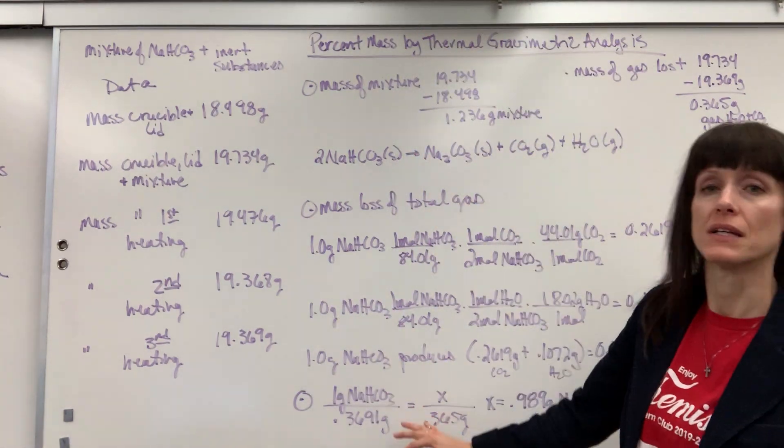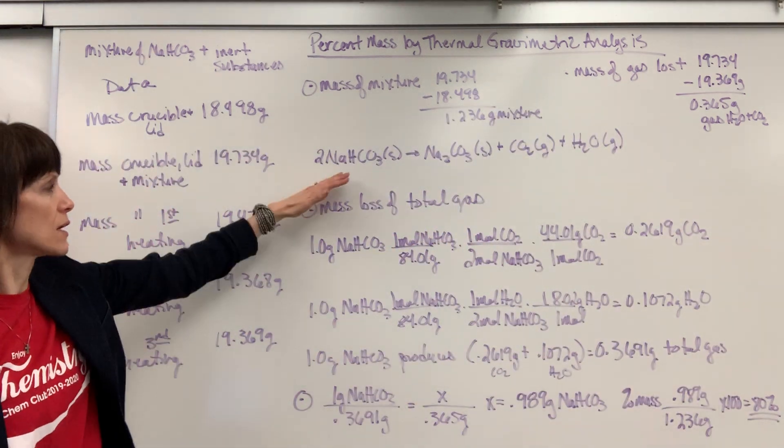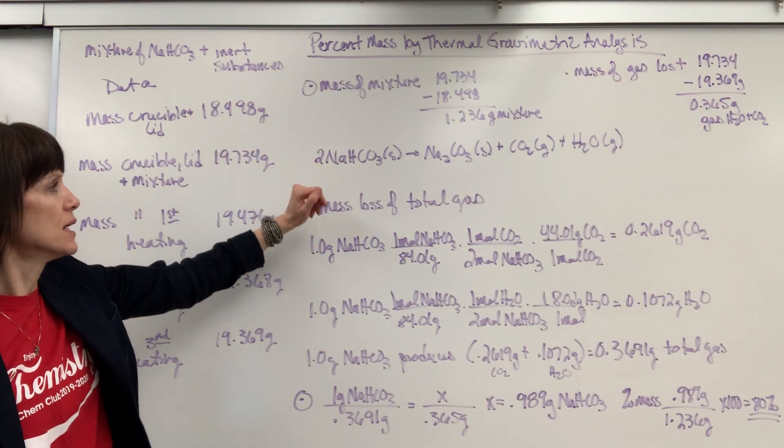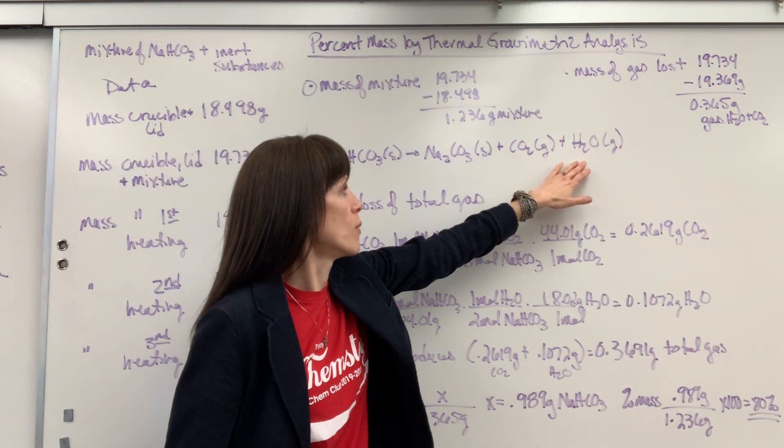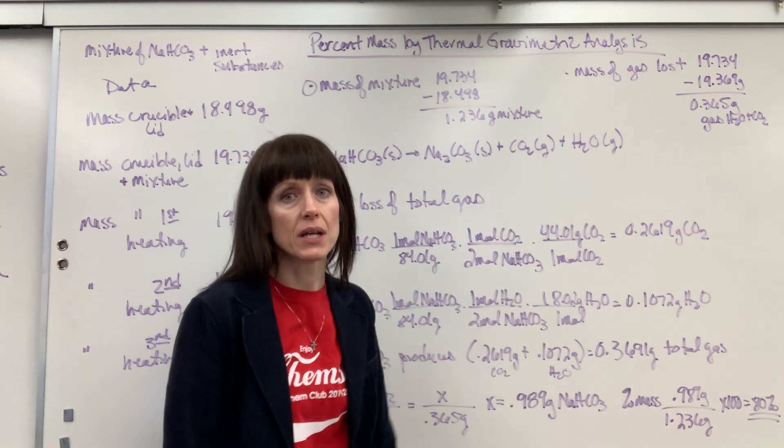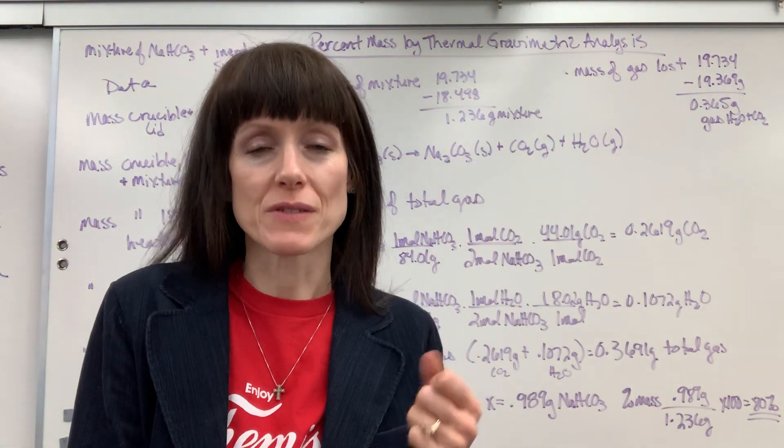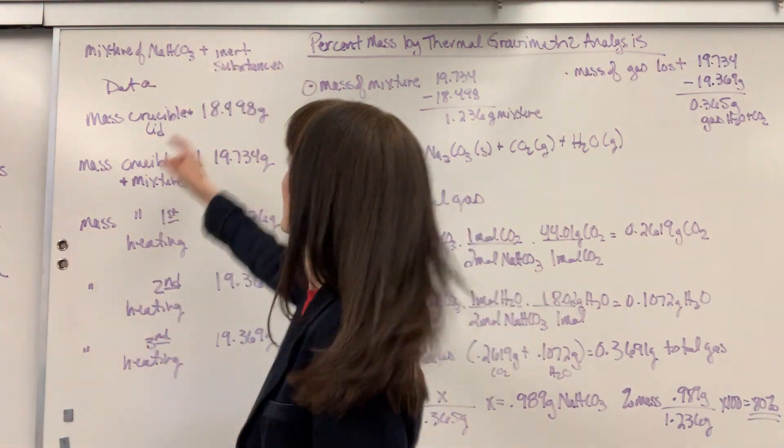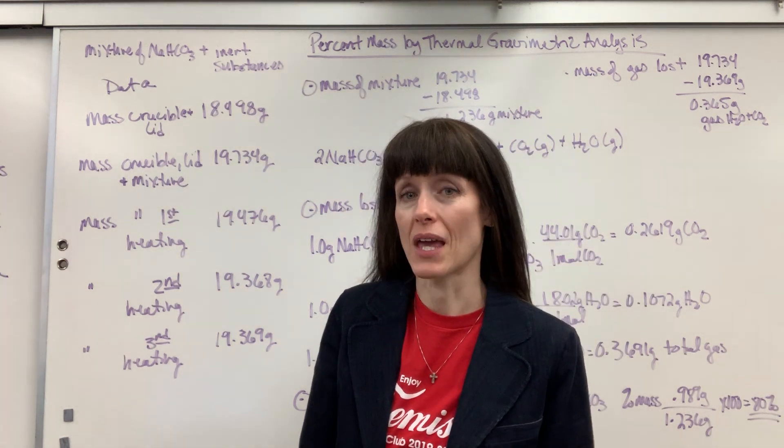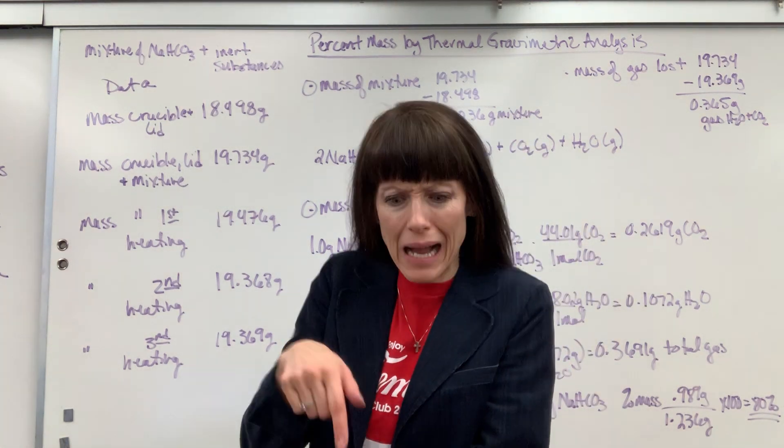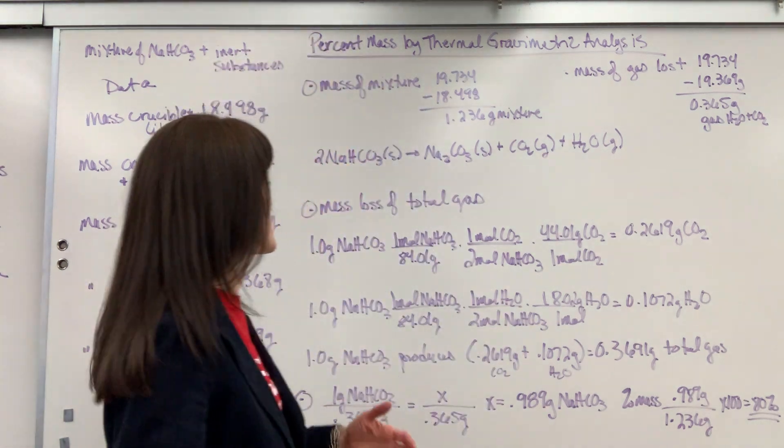Now the math is a little involved, so let me show you the math. Here is our reaction. It's the decomposition of sodium bicarbonate into sodium carbonate and carbon dioxide and water. So there's the gas that's being evaporated. Now ultimately, here's the question: What is the percent mass of sodium bicarbonate in that mixture? What's the percentage of sodium bicarbonate inside of that 1.236 grams? That's the powder I put in the crucible. How much of that, what percent mass is the sodium bicarbonate? So this is how you do it.